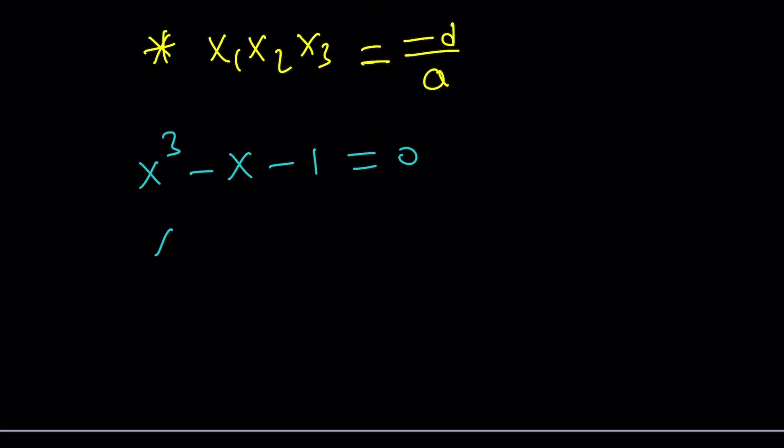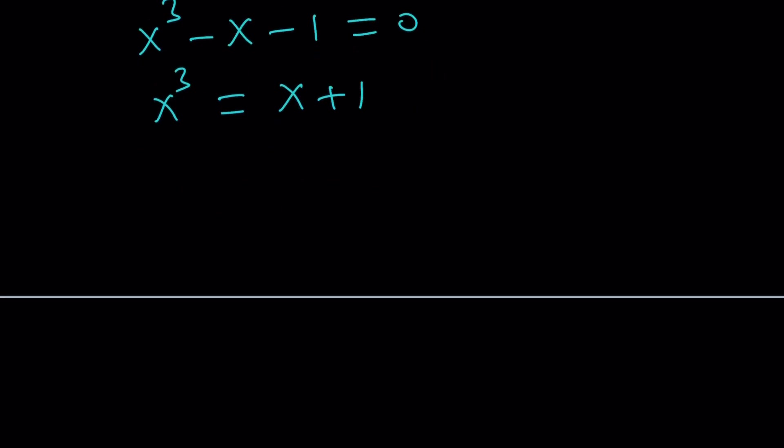We can manipulate this, isolate the x cubed. And then square both sides. Because our goal is to get x to the sixth power, obviously. And that's going to give you x squared plus 2x plus 1. Nice. We were able to write it as a quadratic because this belongs to our equation, right? This comes from our original equation. Therefore, x1, x2, x3 are solutions. We can replace x with those. Great.